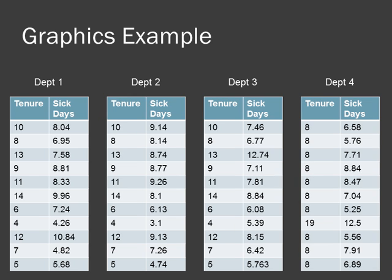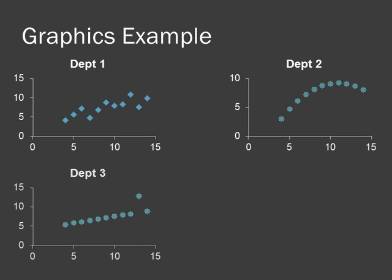To get a sense of the power even simple graphics can provide, let's look at a classic but obviously made-up example. Let's say you have four departments, each with 11 employees, and you want to analyze the impact tenure has on the number of days people are out sick each year. Here's a table with the data for the four departments. The average tenure for each department is 9 years, and the average number of sick days for each is 7.5. Most people could stare at these four tables for hours and not gain much insight. But most people who examine the graphical representations of the same data see very obvious differences and patterns, which aren't nearly so obvious in the tables. When presented in an appropriate graphical format, information and insights practically jump off the screen.